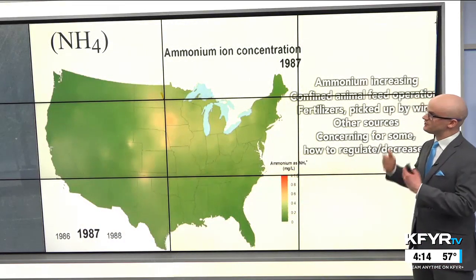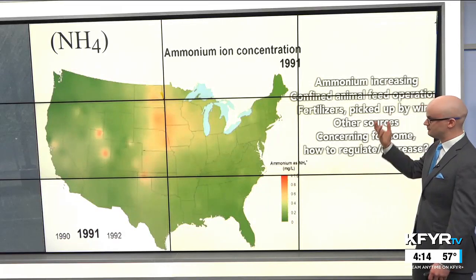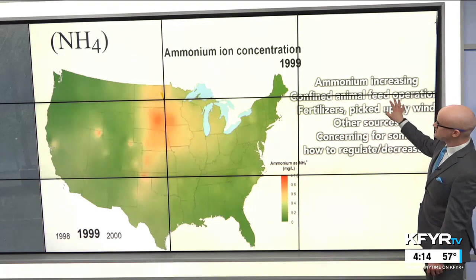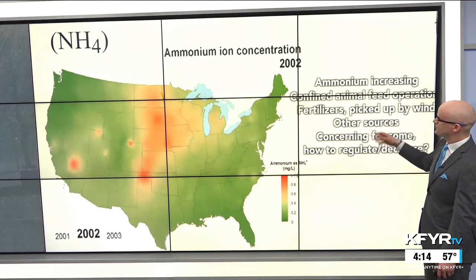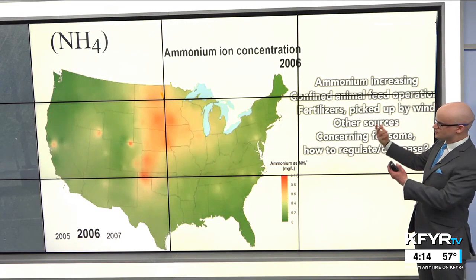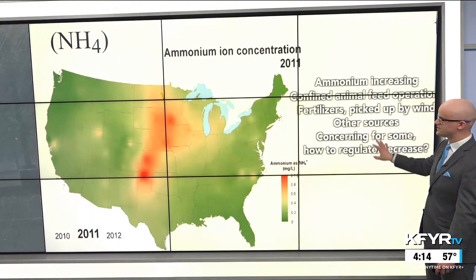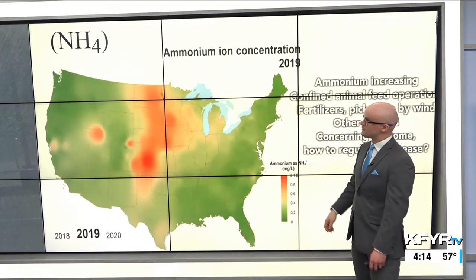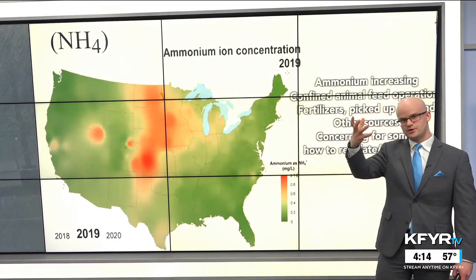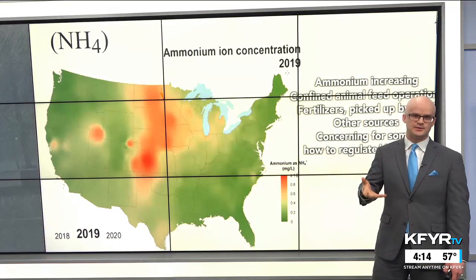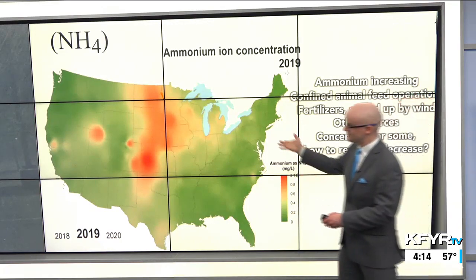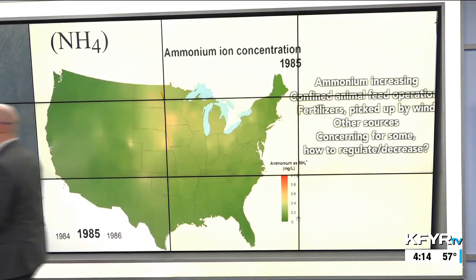With ammonium, a nitrogen-based compound, measuring that over time shows it has increased since the 1980s. That's due to confined animal feeding operations and fertilizers that are picked up by the winds and transported to different locations, among other sources. This is concerning for some in the industry — how can we regulate this? But more ammonium in the atmosphere also means a little more nitrogen coming down to the ground as a bit of free fertilizer, since ammonium is nitrogen-based and important for growing crops.